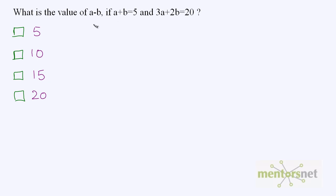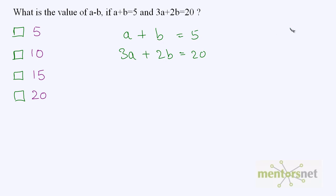Let's move on to the next question. What is the value of a minus b if you have been given these two equations? Let us write those equations. We need to cancel out the variable b. To do that, we will multiply equation 1 by 2. So equation 1 times 2: a becomes 2a, b becomes 2b, and 5 times 2 is 10. Then we subtract equation 2 from equation 1.